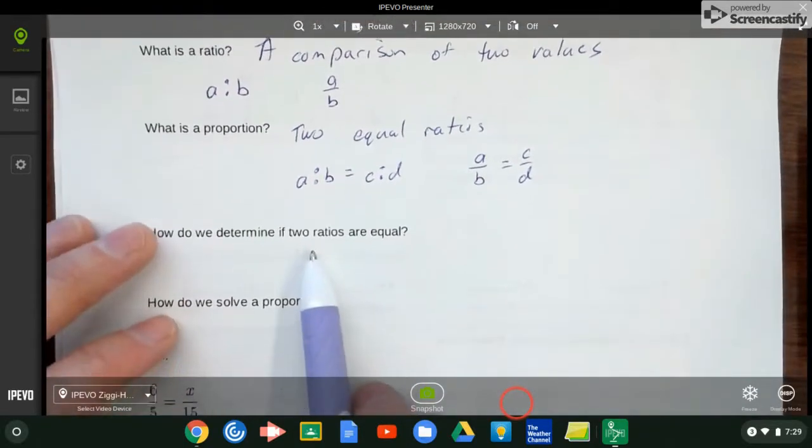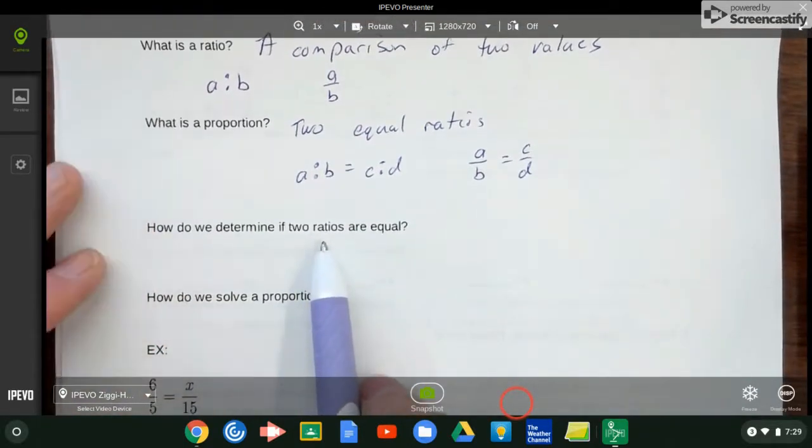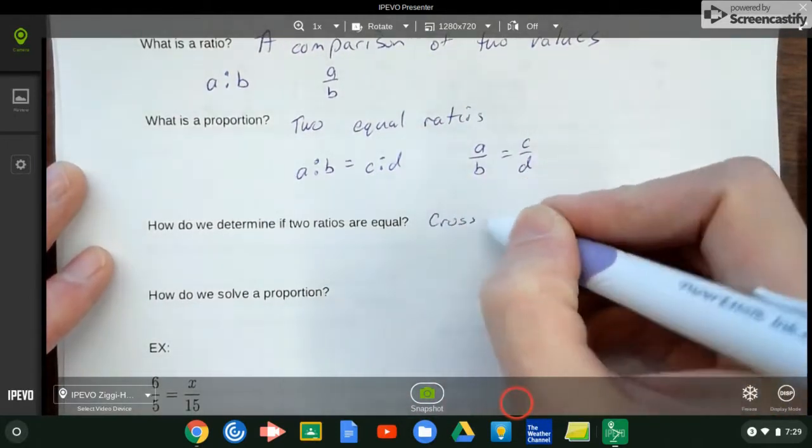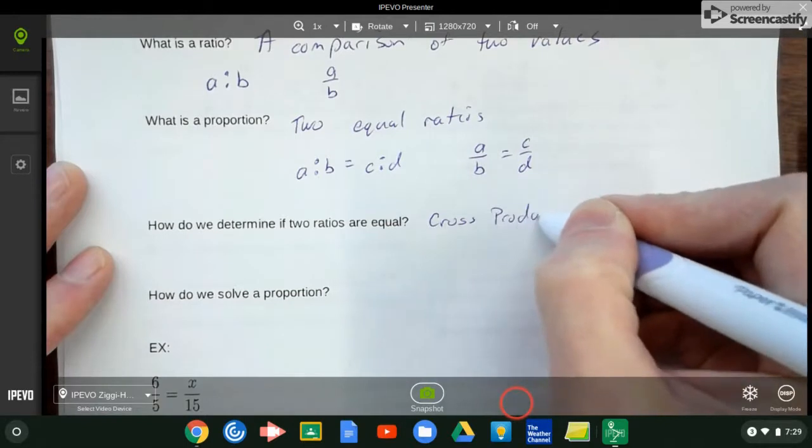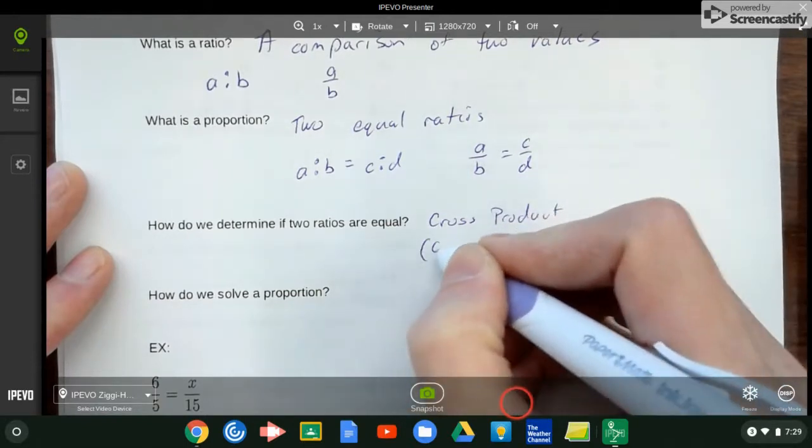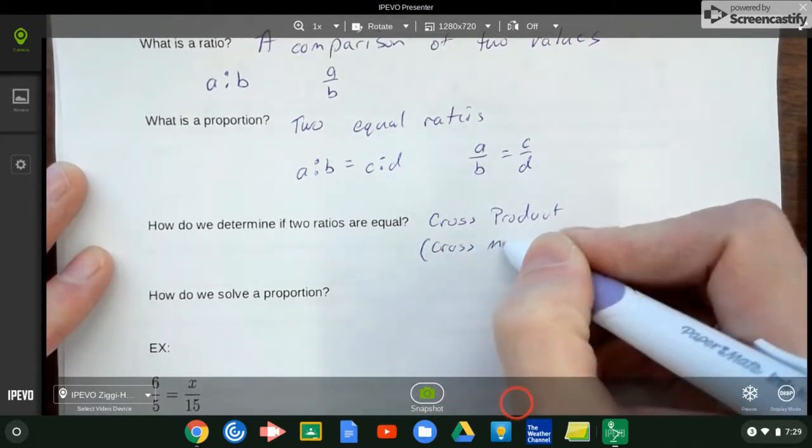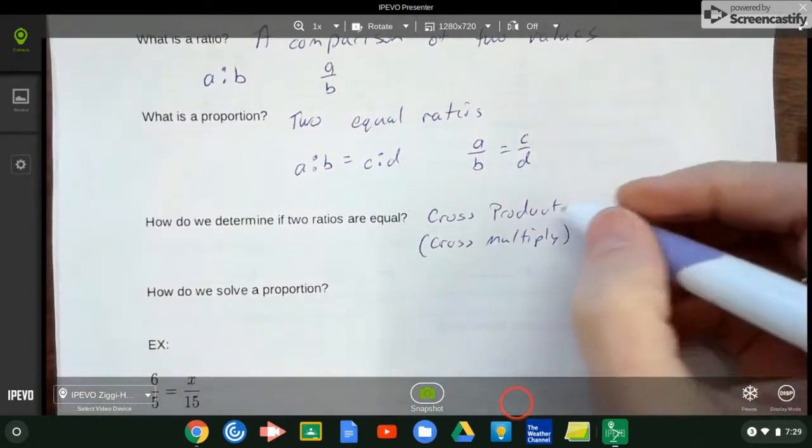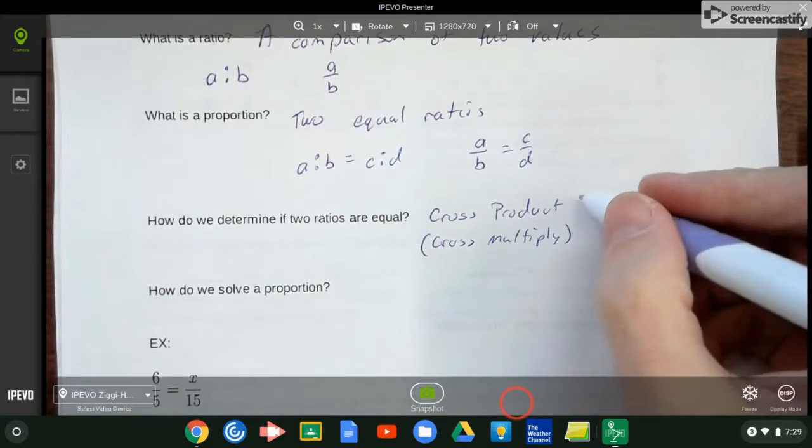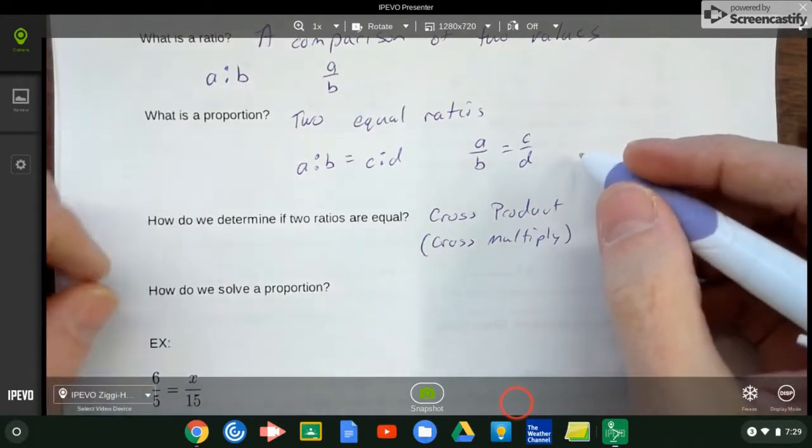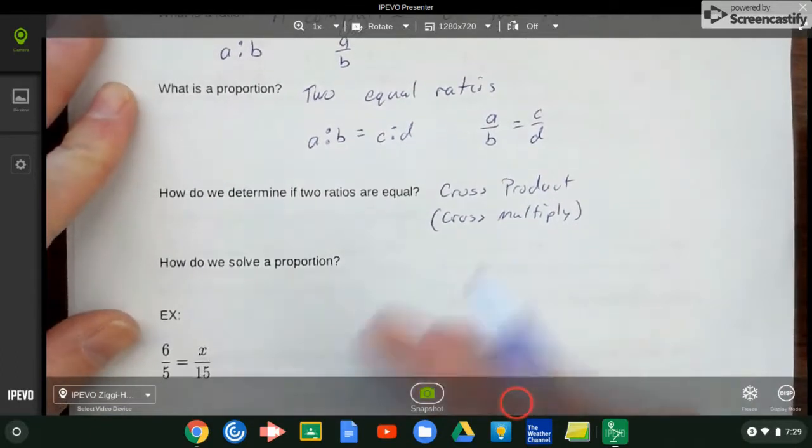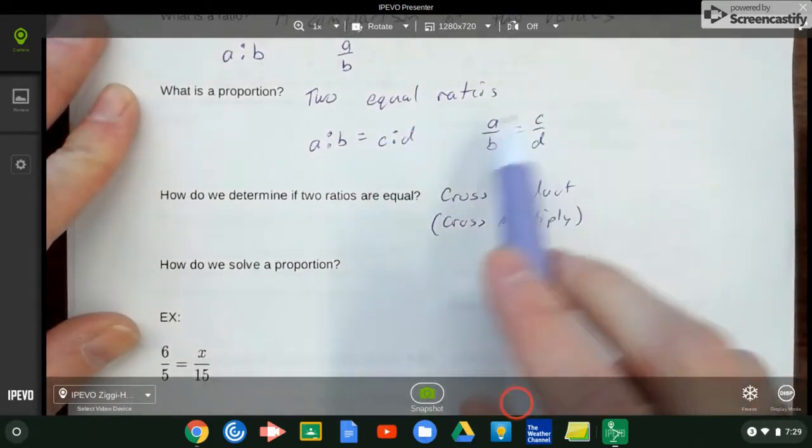Well, this is pretty easy, and we've done a lot of this. This is where we use our cross product, or some people say cross multiply. If the cross product is equal, then the ratios are also equal. So how do we solve problems? We use that cross product.